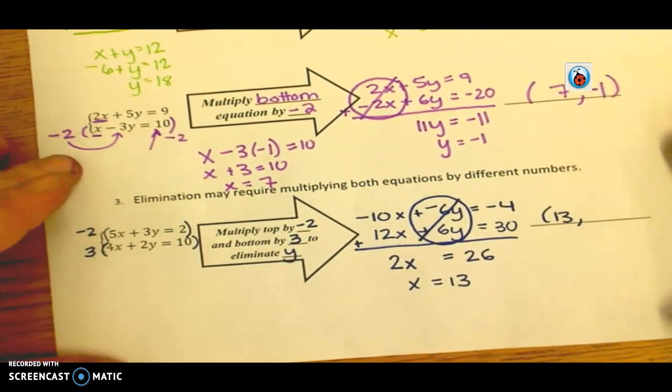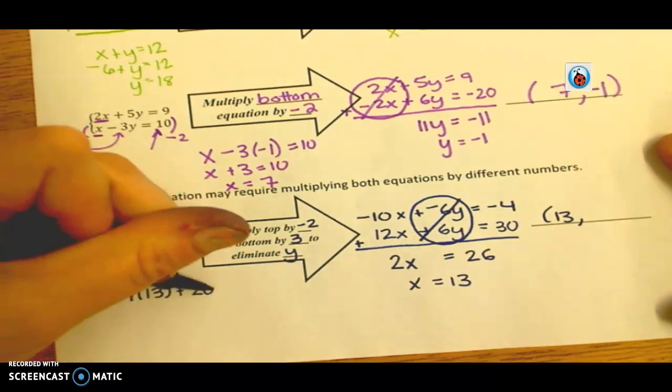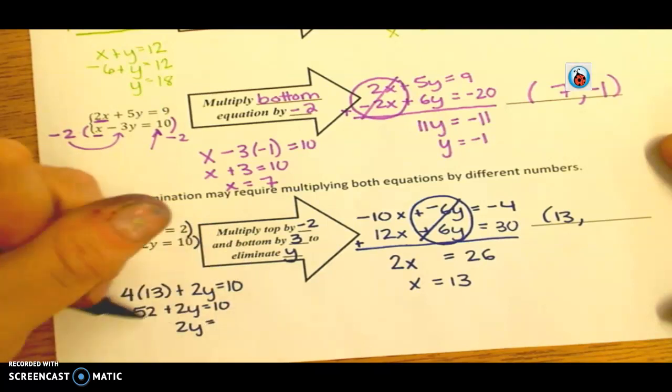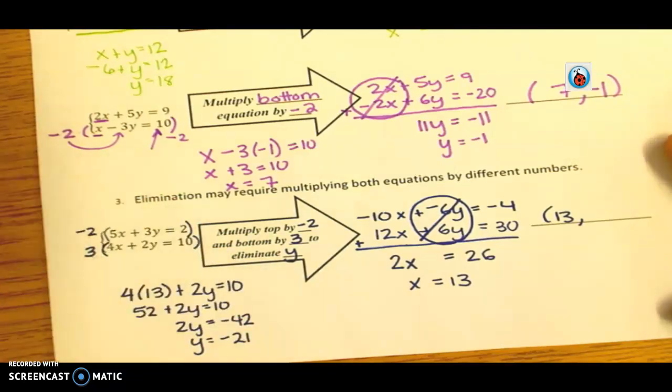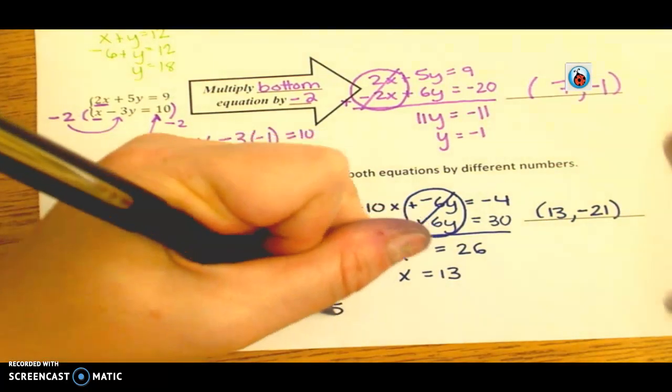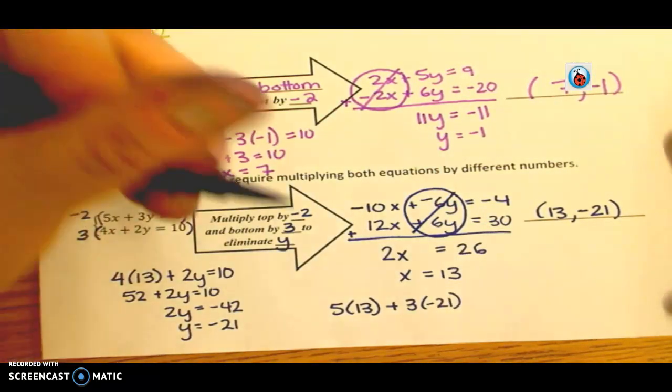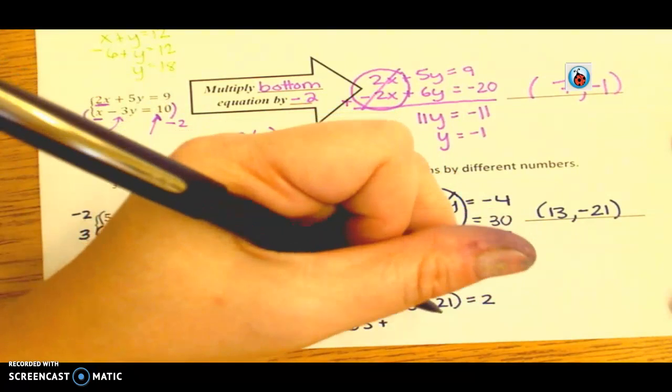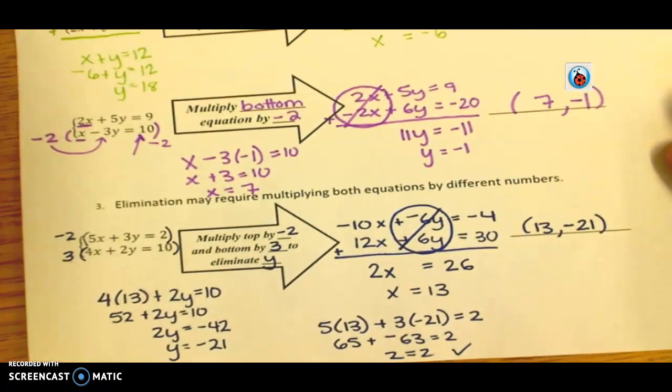13 is my x. And then I'm going to pick an equation. I'm going to do the second one. Let's do 4 times 13 plus 2y equals 10. 52 plus 2y equals 10. 2y. Subtract that 52. Negative 42. Y equals negative 21. Now, I did that quickly in my head, which is sometimes a problem. So, I might want to test that out. Let me just see. That's 5 times 13 plus 3 times negative 21. I'm plugging it into the original, the first equation to test it out. So, I get 65 plus negative 63 equals 2. 2 equals 2. Yep. It worked out. Yay. I did it right. Go Ms. Parasel. Alright.